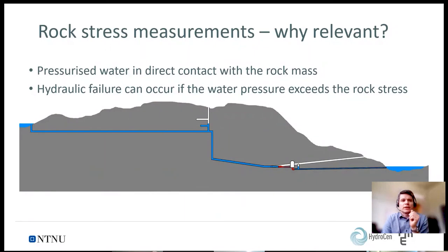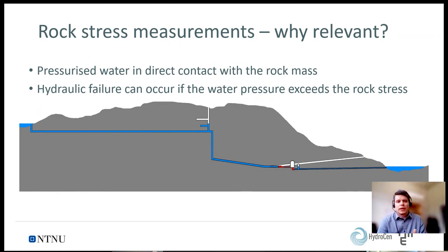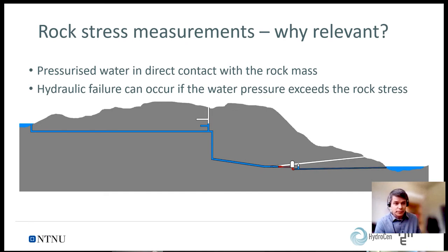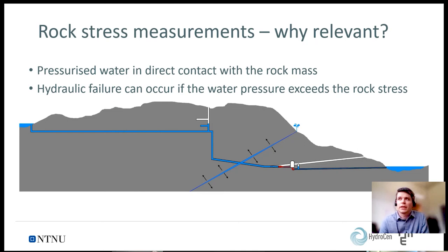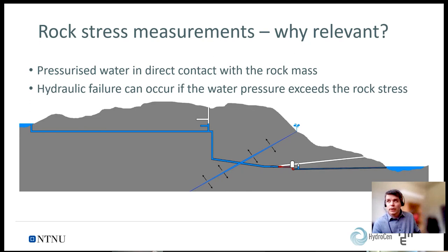Under Norwegian tradition, we usually use unlined pressure tunnels in rock instead of a steel liner. In this context, rock stress measurements are highly important because the pressurized water is in direct contact with the rock mass, applying an outward pressure which, should the water pressure exceed the stresses in the rock, make the tunnel itself fail. This is occurring large scale, causing excessive leakages and landslides — in Norway we have several instances of this, and worldwide also.